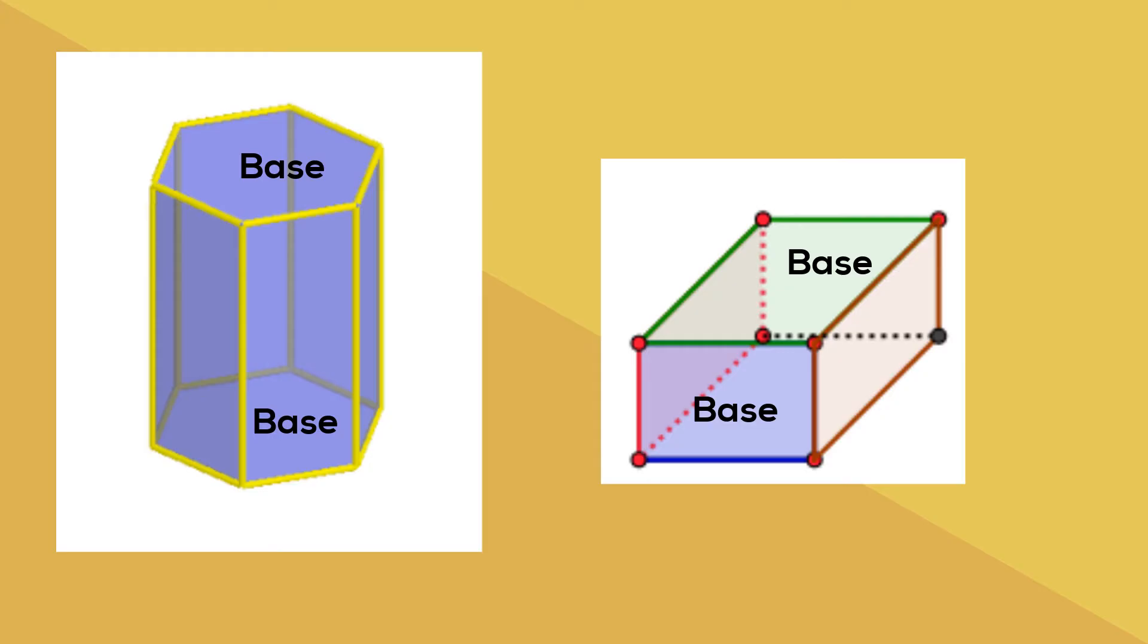And here are two examples of prisms. You have the one on the left, notice the two bases and they are equal or congruent. And then the prism on the right and again two equal bases.